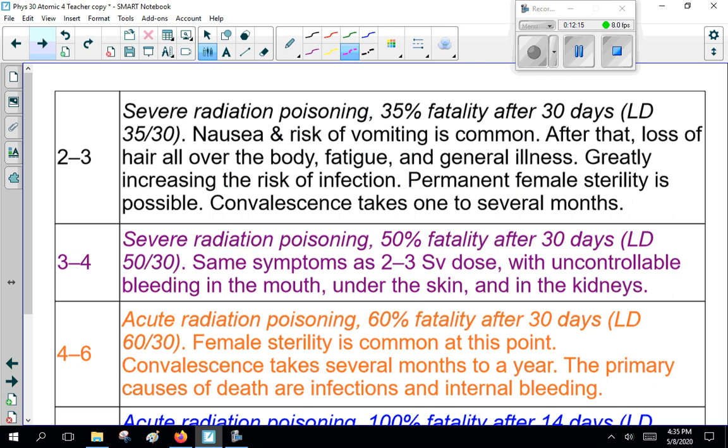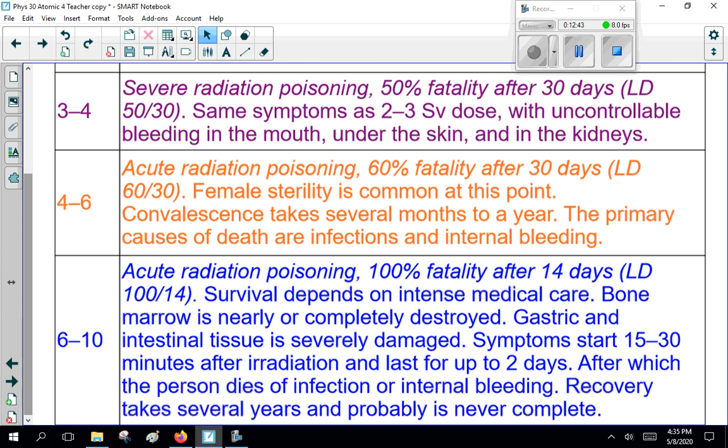All right, now, severe radiation poisoning, if you get 3 to 4 sieverts, it's 50% fatality after 30 days. You tend to get, the tissue breaks down, so you get bleeding in the mouth and your kidneys self-destruct. Now, 4 to 6 sieverts, 60% fatal. Yeah, you're really screwed. Infections and internal bleeding, it kills so many cells, and it just gets worse from here. 6 to 10 sieverts acute radiation poisoning. You're 100% fatality after 14 days. You can survive it, of course. Serious, intense medical care. Your bone marrow is destroyed. You're not making new blood cells. Your intestines are fried. Your immune system self-destructs for a month or more. You're looking at several years to usually it's cancer or your severe internal bleeding or an infection kills you. Really good hospital care. In several years, you can recover. Ish.